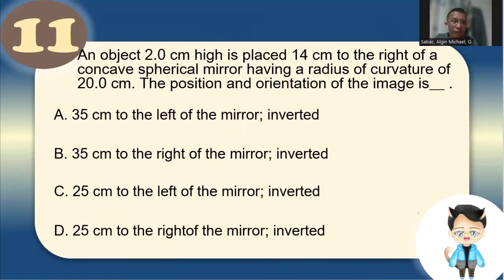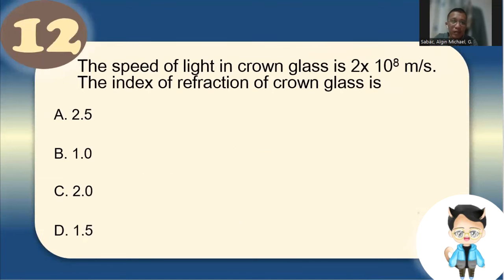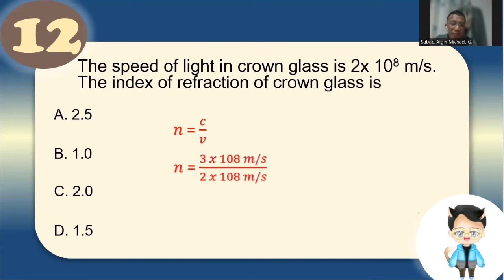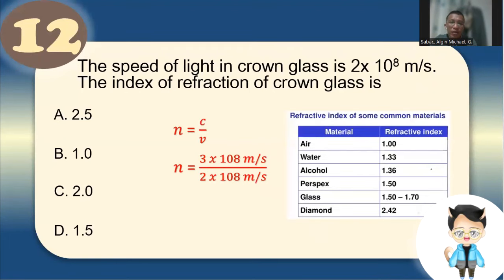Number 12: The speed of light in crown glass is 2×10⁸ m/s. The index of refraction formula is n = c/v, where c = 3×10⁸ m/s. So n = 3/2 = 1.5, which is letter D. For reference: air = 1, water = 1.33, alcohol = 1.36 — memorize air, water, alcohol, and diamond.